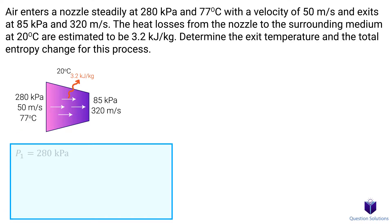Let's start by writing down what we know. The air enters the nozzle steadily at 280 kPa, with a temperature of 77 degrees Celsius. The velocity of the air at the inlet is 50 meters per second, and the exit velocity is 320 meters per second. The final pressure is 85 kPa. We are told that 3.2 kJ per kg of heat loss occurs to the surroundings, which is at a temperature of 20 degrees Celsius.